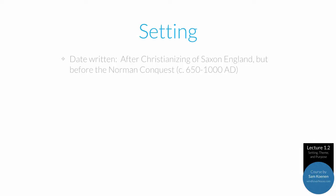Beowulf was written sometime after the Christianizing of Saxon England but before the Norman conquest — so sometime between 650 and 1000 AD. The most probable date is the beginning of the 8th century, and the story reflects the cultural transition of Anglo-Saxon Britain from the paganism of a previous generation to the new glories of Christianity, and the subsequent generations that wrestled with moving from an old pagan past to a new Christian culture.